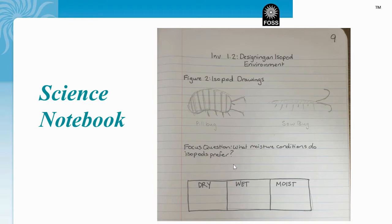In order to observe which moisture conditions isopods prefer, we're going to watch an investigation video and count how many isopods are in each type of soil. Please make a table just like this one so we can record how many isopods are in each soil type after watching our video. Please pause this video and make your science notebook look like mine.